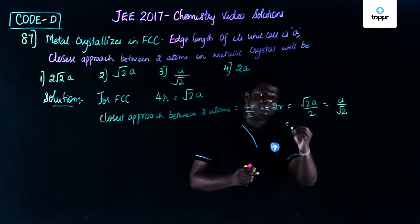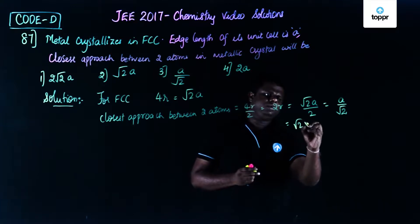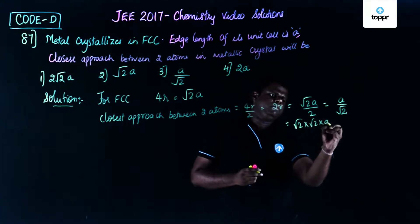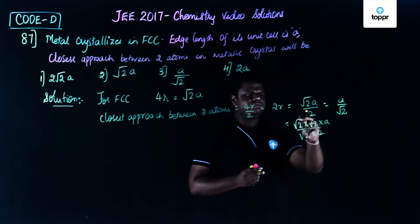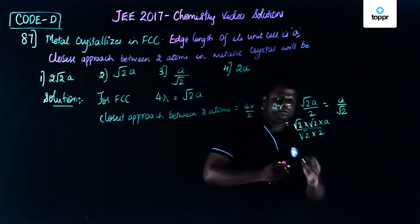You can simply rationalize this. Let me do this for you. So you have root 2 into root 2 into a divided by root 2 into 2. I have just multiplied and divided by root 2.